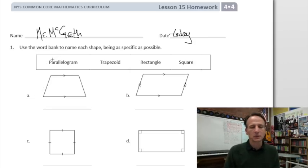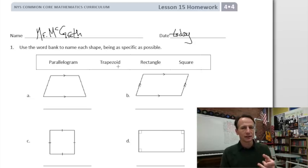Alright, use the word bank. Number one, our instructions read to name each shape being as specific as possible. That's an important instruction because sometimes these figures can fit the definition of more than one figure, but we want to use the most specific name. So when we look at this first one, these little arrows here on these sides, what do those mean? It means that those sides are parallel. So when we look at this side, it's parallel to this opposite side here. However, these sides are not parallel.